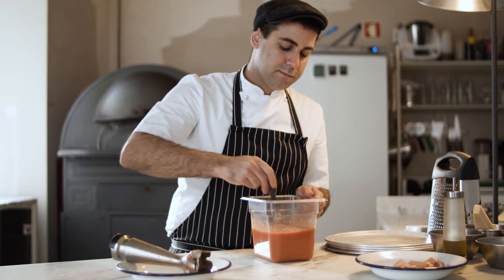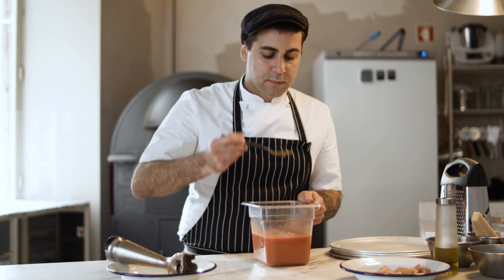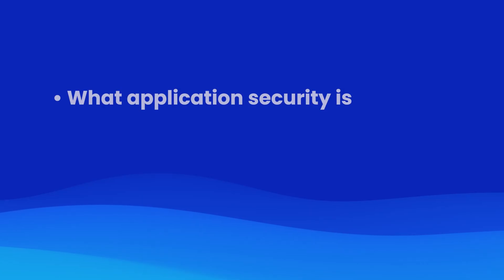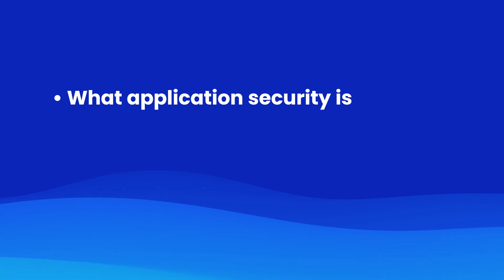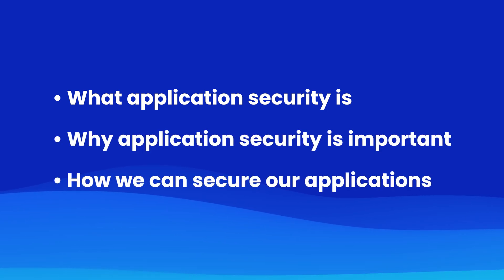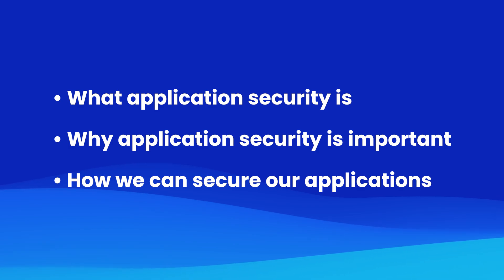Last but not least is interactive application security testing. This is about combining static and dynamic testing approaches. These perform testing on application and data flow using predefined test cases, and the tool may recommend additional test cases based on the results. So in closing, we learned what application security is, why it's important, and how we can go about securing our applications. We also learned about some of the tools that are available, along with their purposes and examples of them.